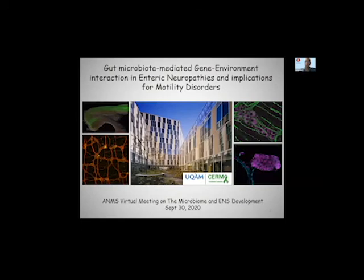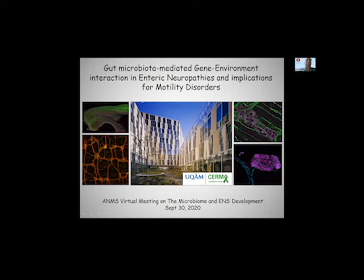Thanks, Eliane. As illustrated in this CSAR model, enteric neuropathies can be regrouped into a single spectrum of motility disorders where detrimental and also beneficial environmental factors — non-genetic factors — will tip the balance toward more or less severe phenotypes in genetically predisposed individuals. Today I would like to focus on the potentially key role that the microbiota may have in this regard.